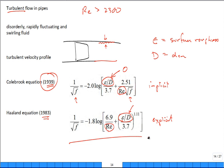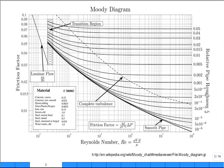The Holland equation (1983) is an explicit alternative to Colebrook, giving friction factor directly as a function of Re and relative roughness. Surface roughness epsilon ranges from very small for PVC, drawn copper, or glass pipe (smooth) to much larger for concrete or old cast iron pipe. The Moody diagram displays friction factor (y-axis, log scale) vs. Reynolds number (x-axis, log scale) from Re ~ 500 to 10 million.